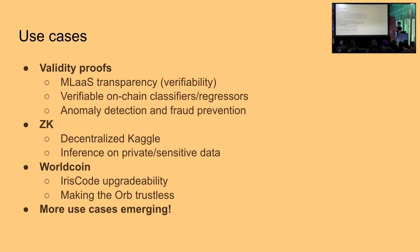Another useful case is running inference on private or sensitive data. For example, a classifier trying to find whether a patient has cancer — you'd be able to prove with some accuracy that you ran a model on sensitive data, hide the execution trace, and prove to the patient, an insurance company, or a medical expert that the model ran and classified the result in some way.